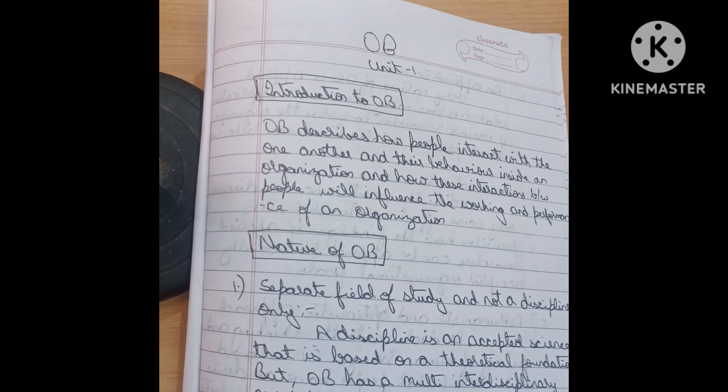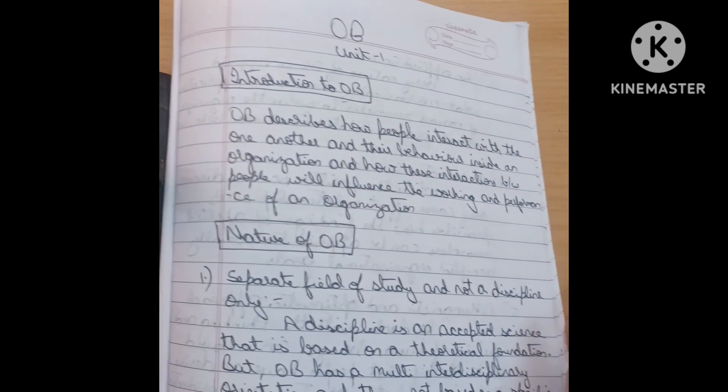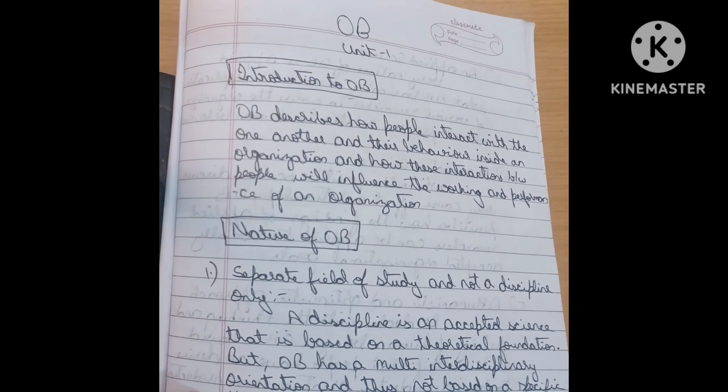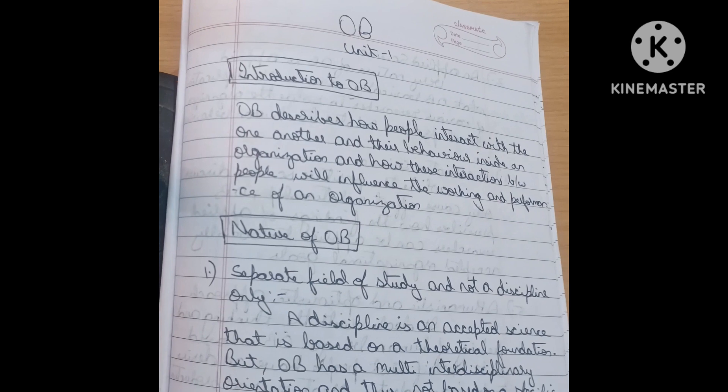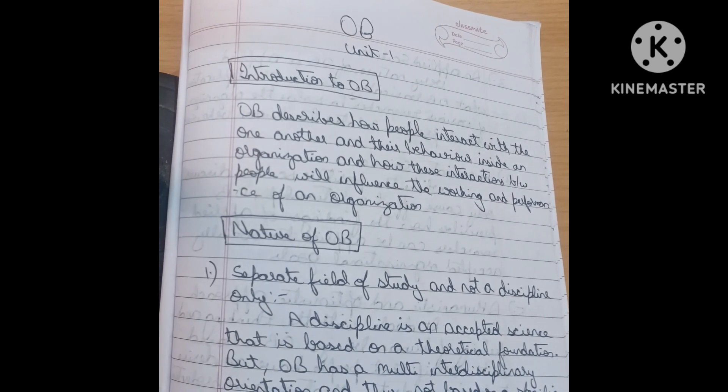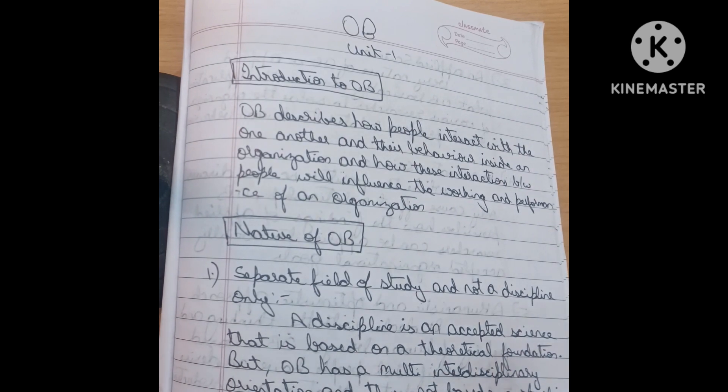I will give the points how to attempt the questions in unit wise just for pass marks because one day only it is there. For that how to prepare and how to write the OB notes, organizational behavior JNTUH R18 CSE 4-2. I will just give the sidelines how to write it, how to attempt the questions.